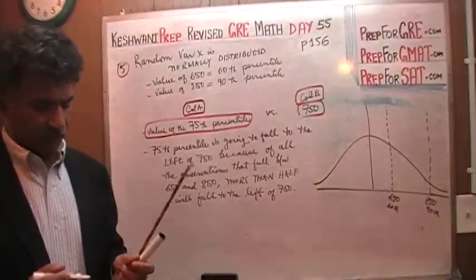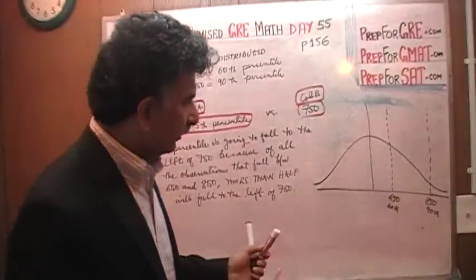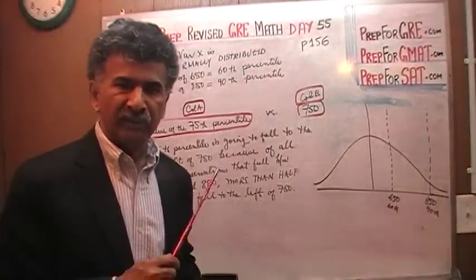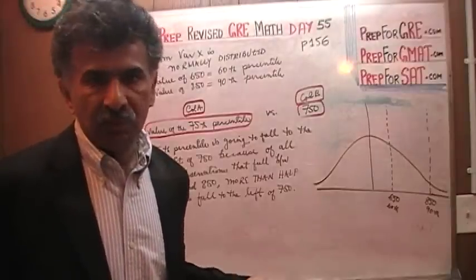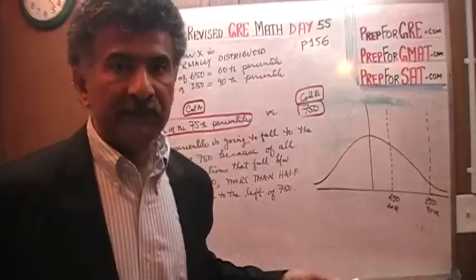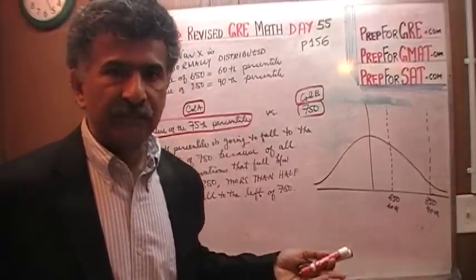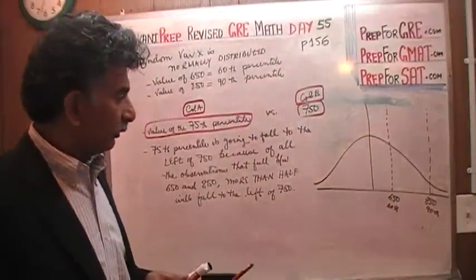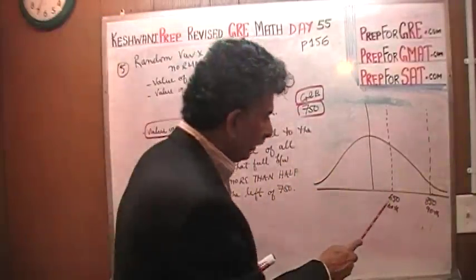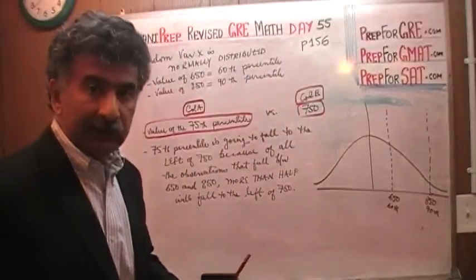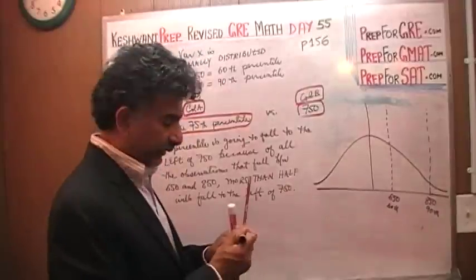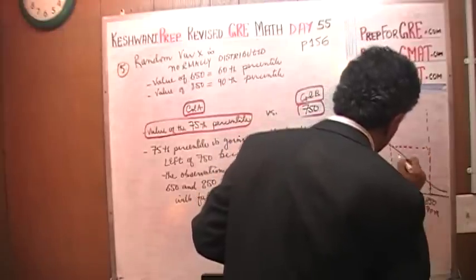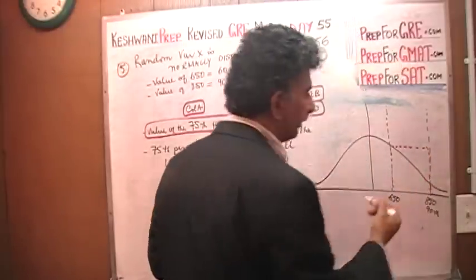Now, had it been a symmetric distribution, I contemplated, I went back and forth trying to figure out how to explain this problem. Had it been uniformly distributed from 650 to 850, the shape of the curve would have looked like this. I am going to draw this thing and then I am going to erase it. This would have been the shape had all the variables been uniformly distributed. But that is not the case.